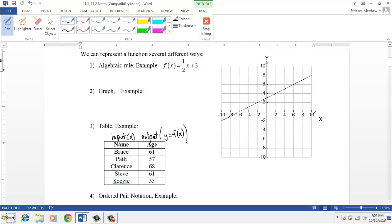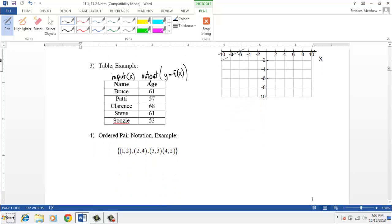And then we also have examples of functions as ordered pairs. So here we have four different ordered pairs, and this represents a function.